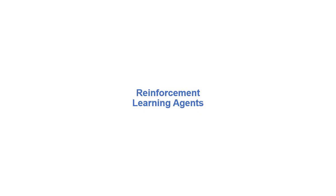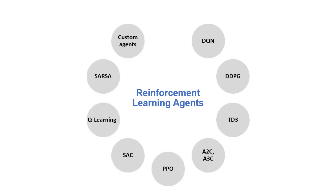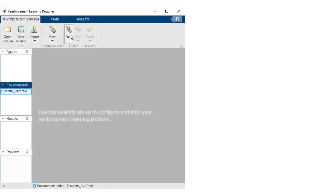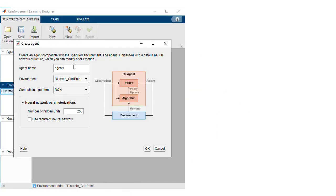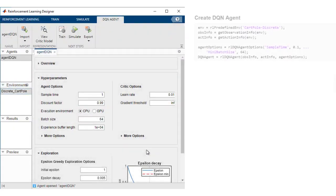Define an agent by selecting from built-in algorithms such as DQN, PPO, and SAC, or develop your own custom algorithm. Create the agent object interactively in Reinforcement Learning Designer or programmatically.